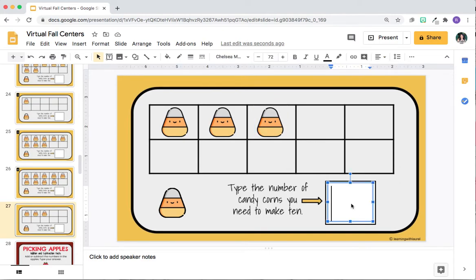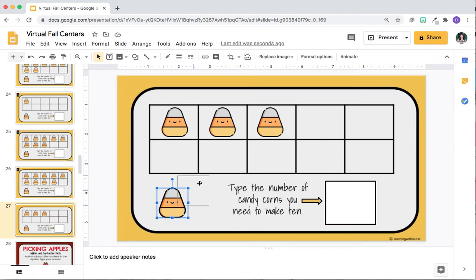And then students would just double-click, and they would type in how many candy corns they need in order to make 10. And students are able to click here, and they're able to drag the candy corns as well. Okay, so that's also very simple.